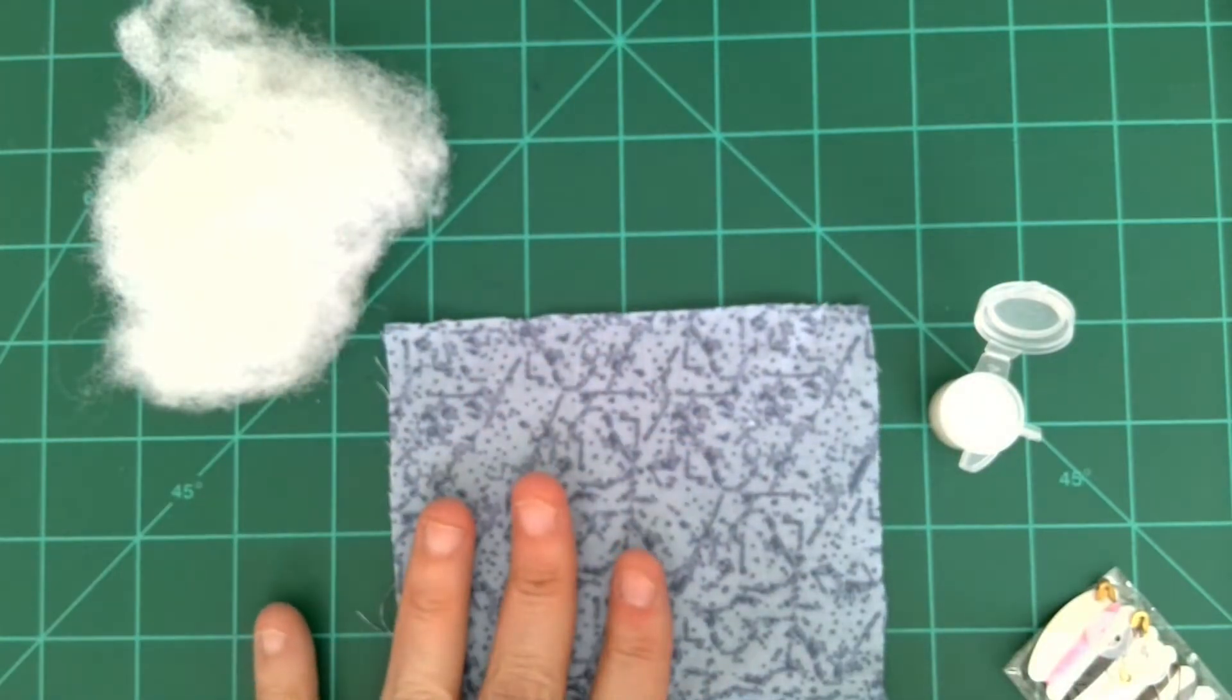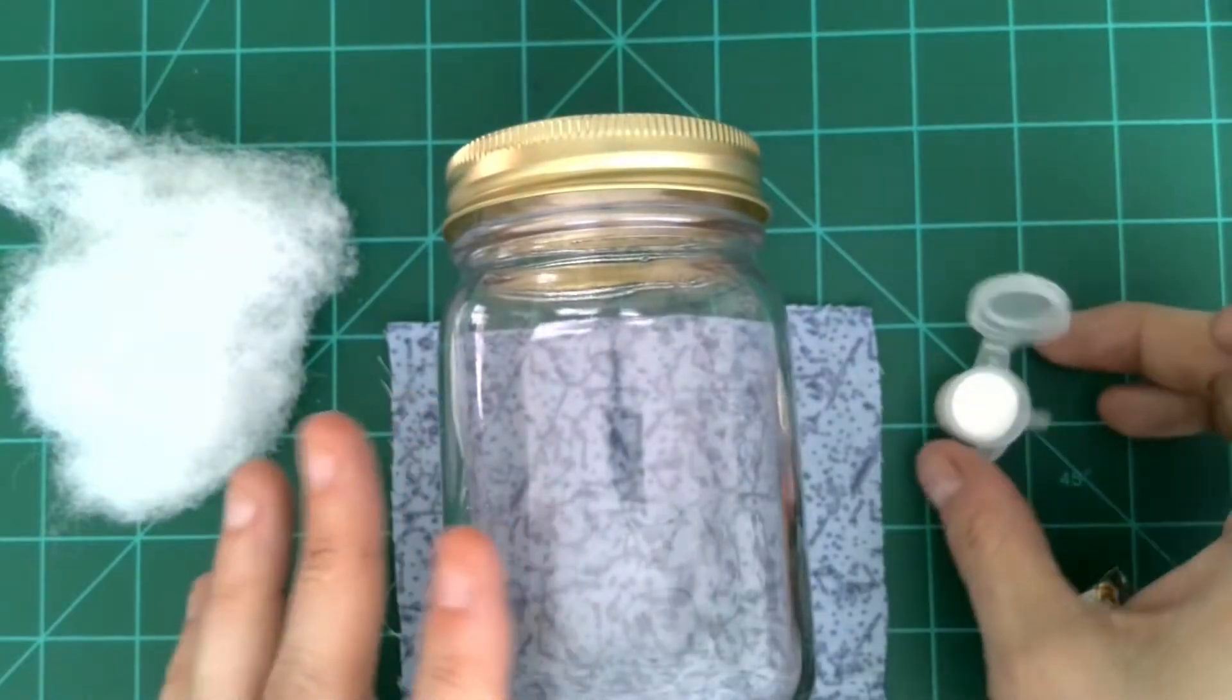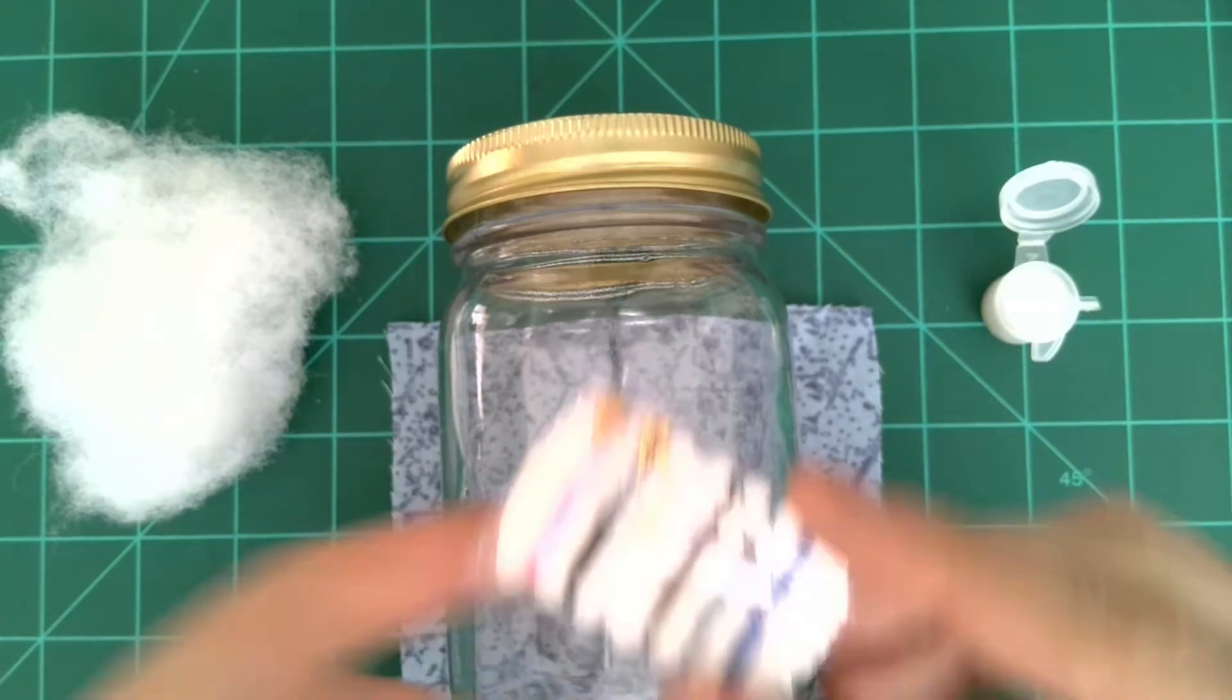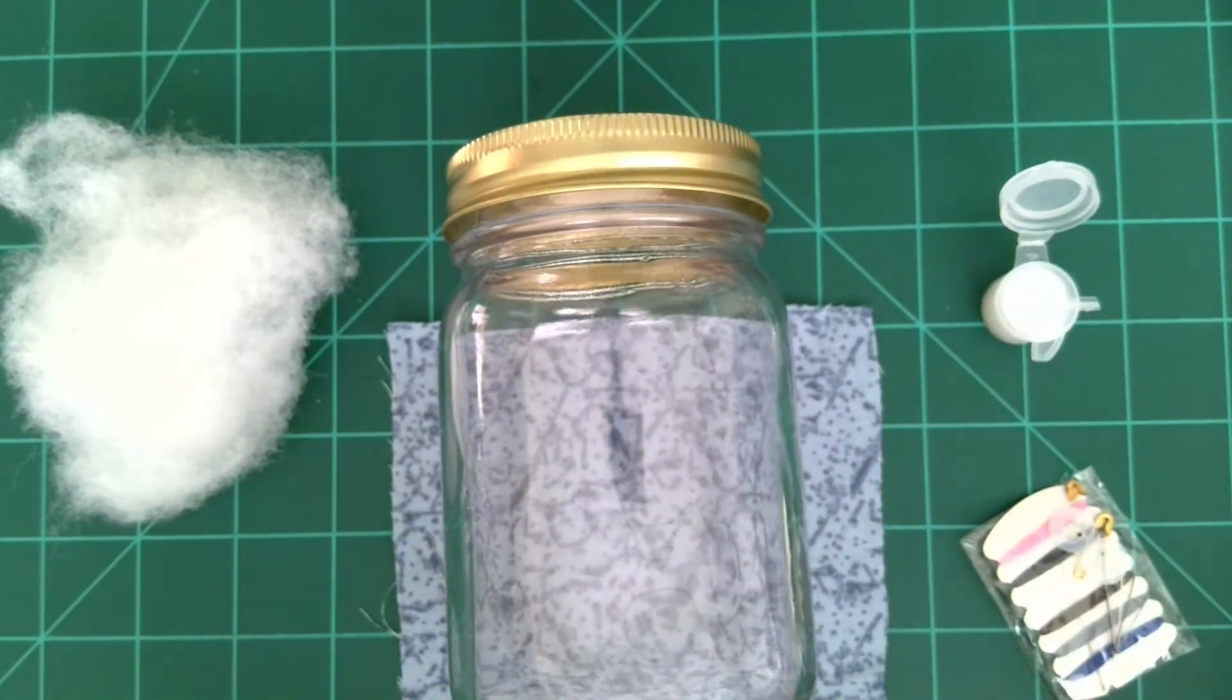We'll be using some material scraps, polyfill, a little bit of craft glue, and a mini sewing kit. That is what is included in your kit.